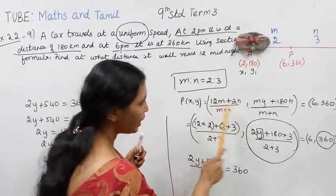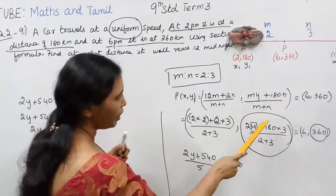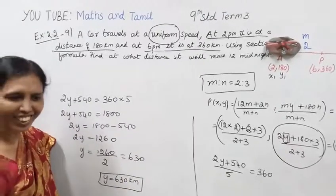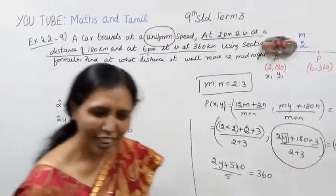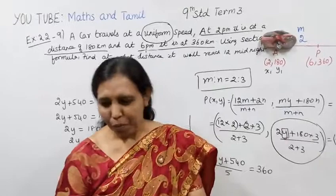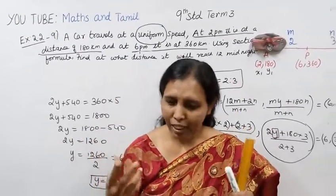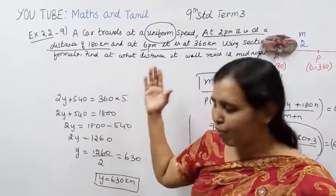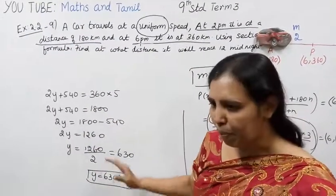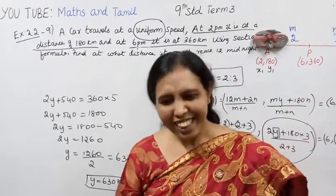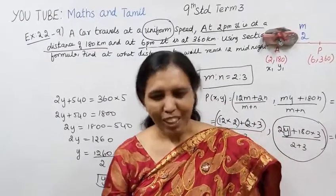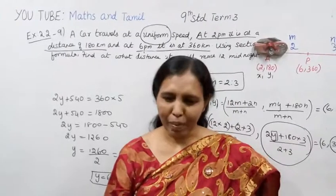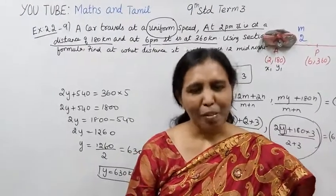Using section formula, the answer is 630 km at 12 midnight.